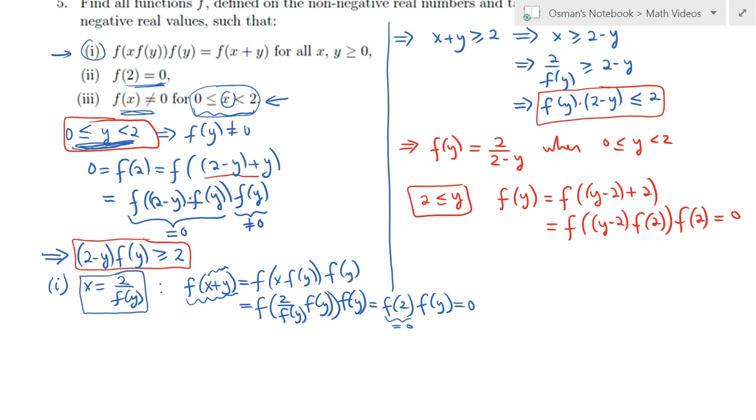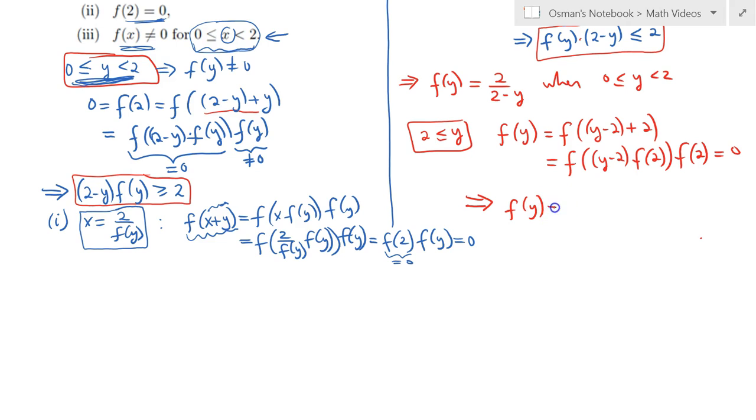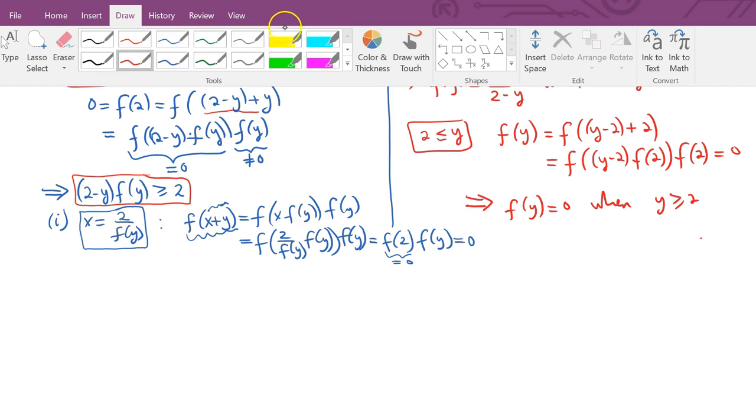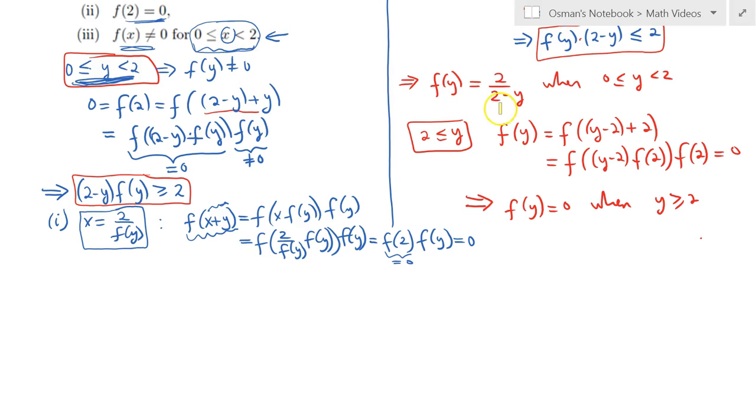So therefore, to conclude, we can say that f of y is simply equal to 0 when y is greater than or equal to 2. And those two relations, expressions will completely define f of y on the given range, on the given domain. So that completely defines our function f, and we are done.